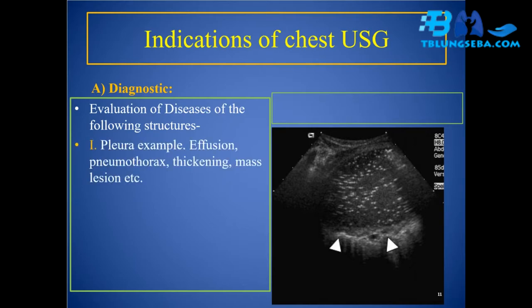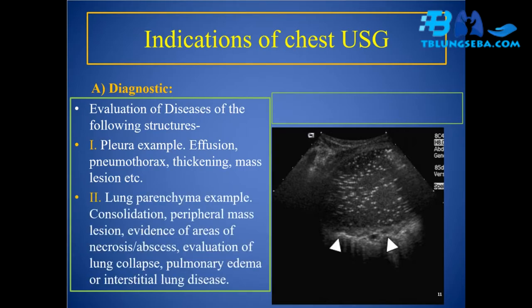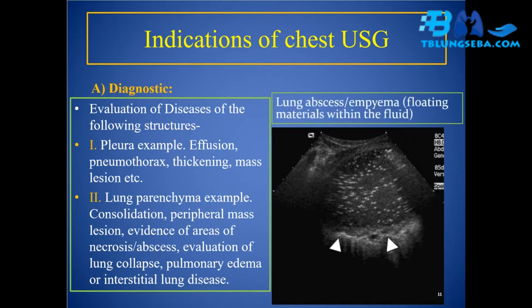Indications of chest USG — diagnostic evaluation of diseases of the following structures: (1) Pleural — examples include effusion, pneumothorax, thickening, and mass lesion. (2) Lung parenchyma — examples include consolidation, peripheral mass lesion, evidence of areas of necrosis, abscess, evaluation of lung collapse, pulmonary edema, or interstitial lung disease, and lung abscess.